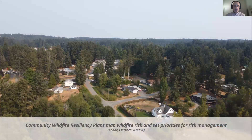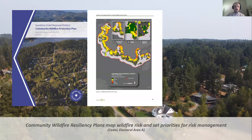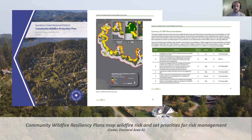What is a community wildfire resiliency plan? CWRPs for short are adopted by local government. They map wildfire risk around communities and propose recommendations to reduce that wildfire risk. The plans are paid for through provincial government grants, and what you get at the end is a high-level strategy for managing wildfire risk in your community. We'll be preparing one of these plans for each electoral area A and electoral area C — you're lumped together for the online presentation, but you'll each have your own document.